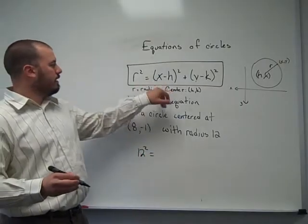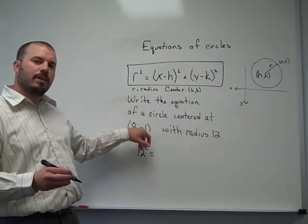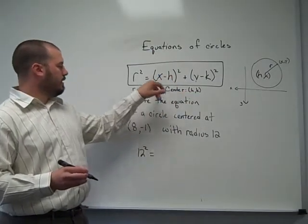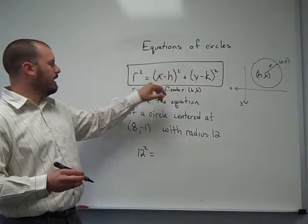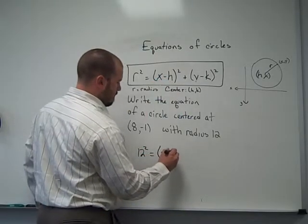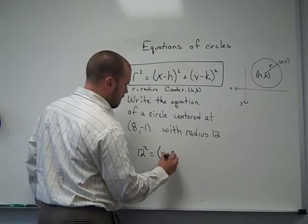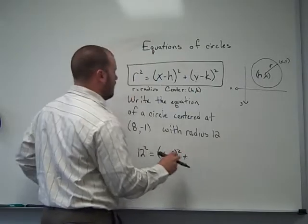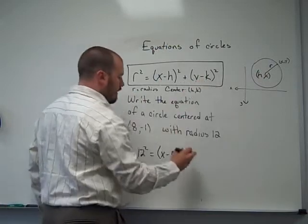And then our center is hk. The center we're working with is 8 negative 1. So 8 in place of h, and then negative 1 in place of k.